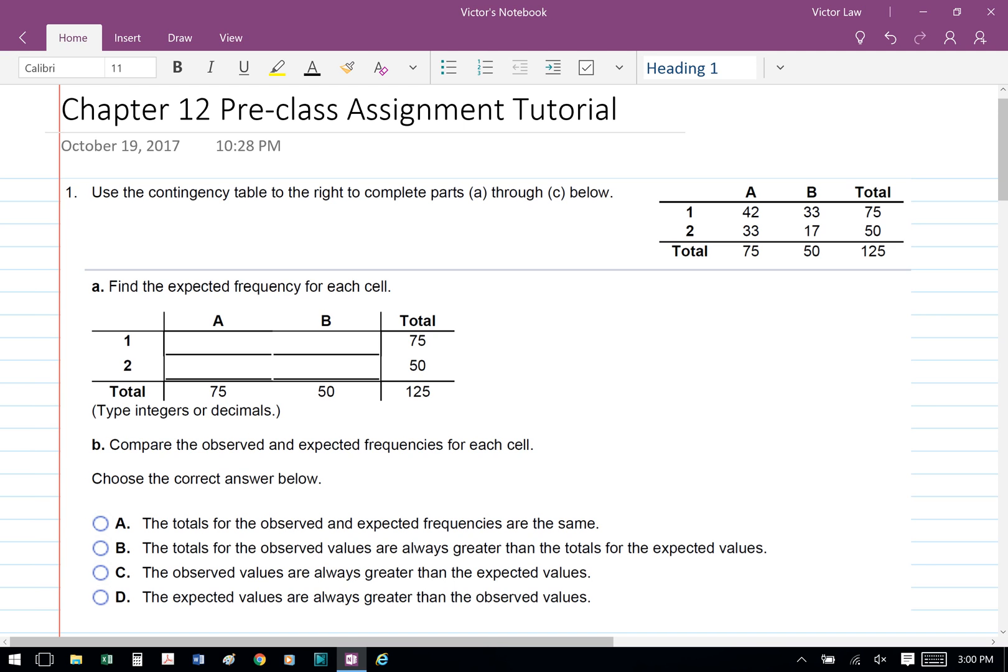Business Stat Chapter 12 Preclass Assignment Tutorial Question 1: Use the contingency table to the right to complete Parts A through C below. Part A: Find the expected frequency for each cell.